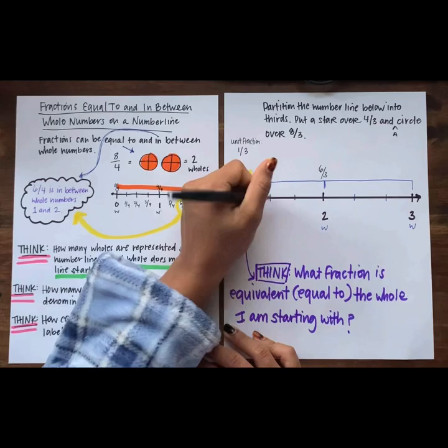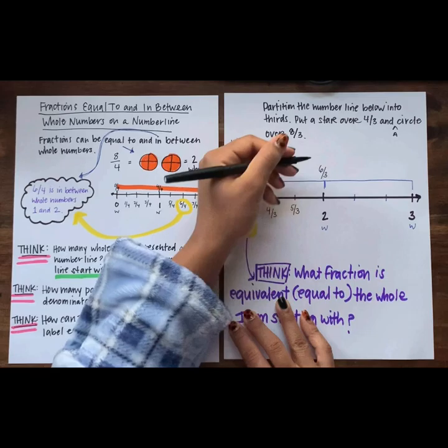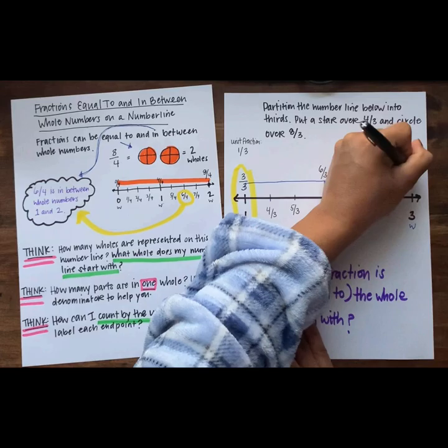All right, let's count by thirds: three-thirds, four-thirds, five-thirds, six-thirds, seven-thirds, eight-thirds, nine-thirds.